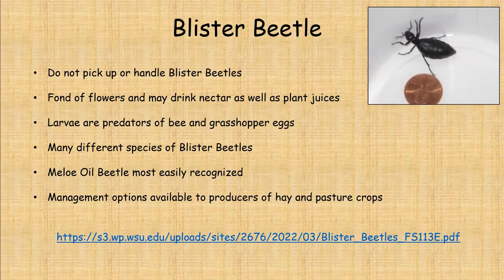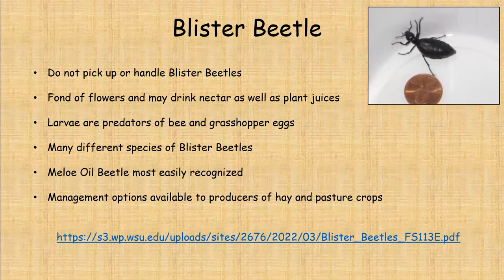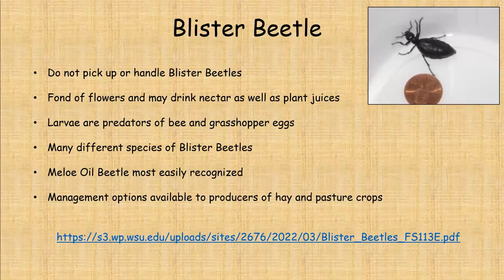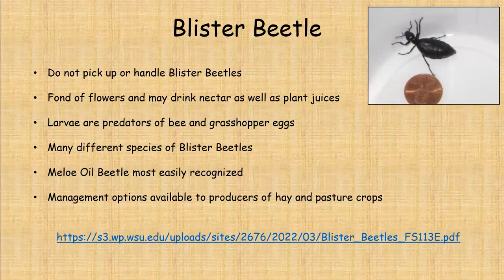Blister beetles are fond of flowers and may drink nectar as well as plant juices. The larvae are predators — unfortunately of bee eggs, but also — the good thing — of grasshopper eggs. There are many different species of blister beetles, but the one shown here from the Meloidae oil beetle family is easily recognized because its wing tips do not go all the way down past the abdomen; you can see lines and marks on the exposed abdomen. Management options are available if you produce hay or pasture crops — look up information online to help you.